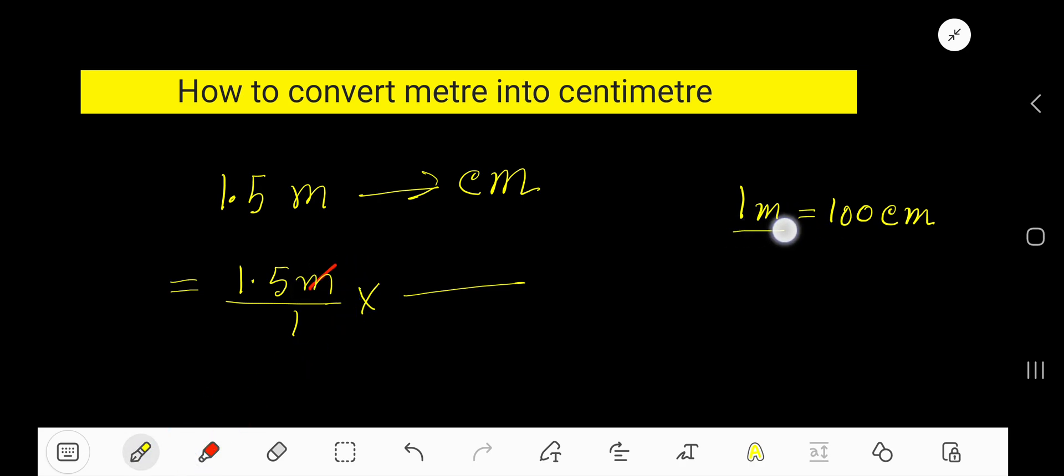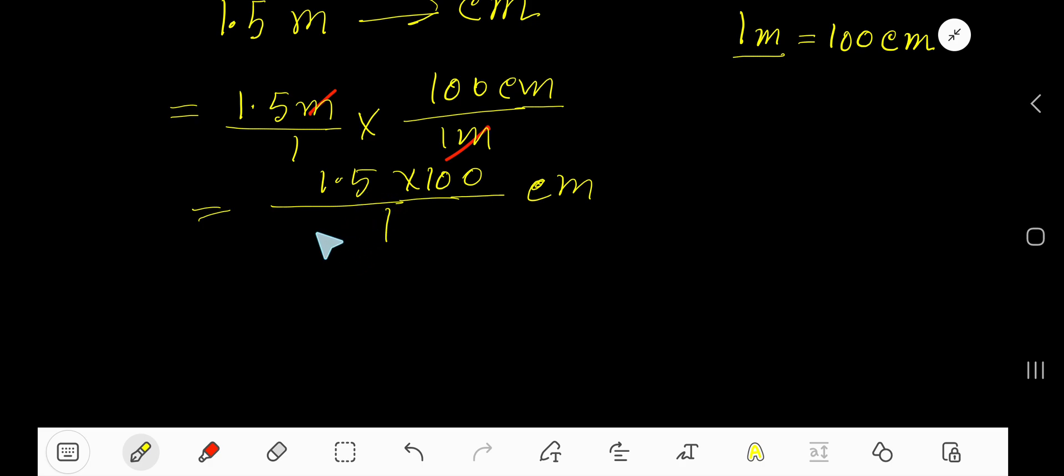What will you do? Just write this part as denominator and this part, 100 centimeter, will come in the numerator. Now multiply top numbers together: 1.5 times 100 divided by what? 1 times 1. Centimeter. Now multiply 1.5 times 100 centimeter. If you divide this by 1 you will get this.